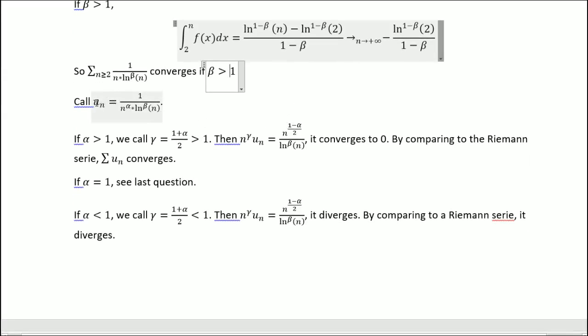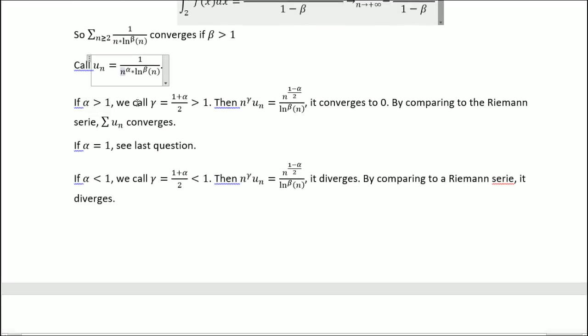Now we will take the example of u_n. So not alpha equals 1, but in all cases. If alpha is superior to 1, we call gamma to be equal to 1 plus alpha over 2, that is superior to 1. Then we replace it with n to the power of gamma u_n. And actually this converges to 0 due to comparison, and so it converges.